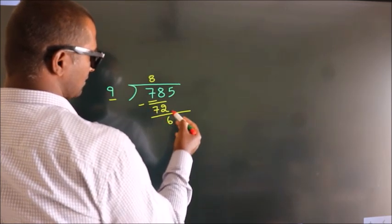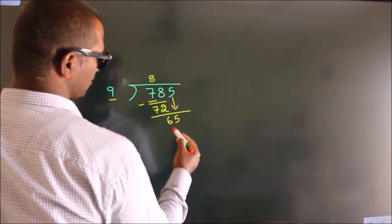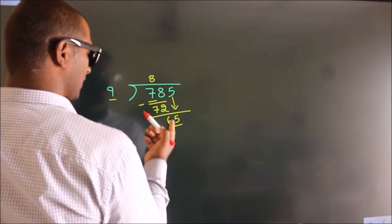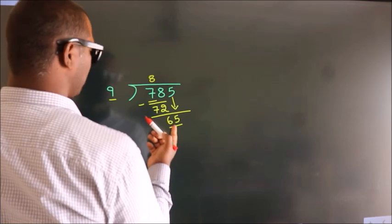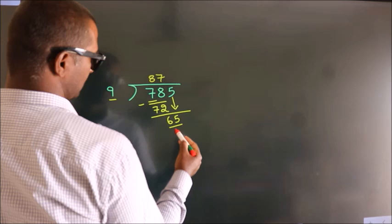After this, bring down the number beside it. Bring 5 down, so 65. A number close to 65 in the 9 table is 9 times 7, which is 63.